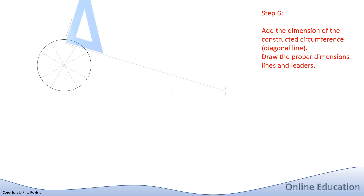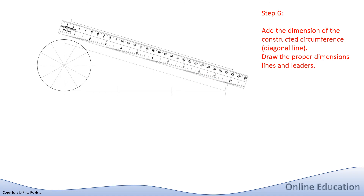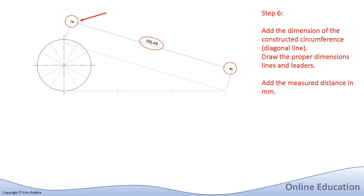We will now indicate the length of the circumference that we have constructed using dimensions. We do this by placing our set square on the base of our diagonal line and drawing a 90 degree leader on the far left as well as on the far right side of our diagonal line, which is our circumference length. Then we will draw parallel to the circumference a light construction line for our dimension, add the arrow heads, and indicate the distance measured with a calibrated scale ruler, which in this case will be 188.49 millimeters.